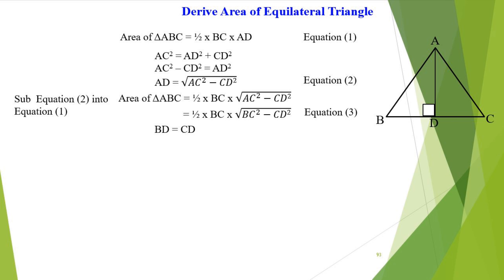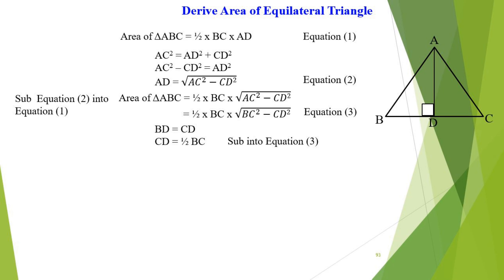In addition, in an equilateral triangle, BD equals CD, and CD is half of BC. So when we substitute CD equals half times BC into equation 3,